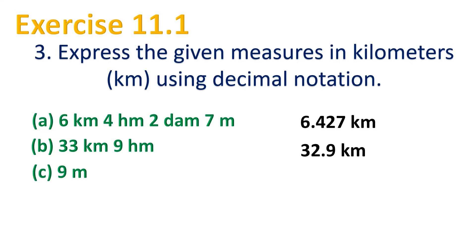Question c: 9 meters — we have to express this in kilometers. There are no kilometers, so we start with 0 point. There are no hectometers, so that is also 0. There are no decameters, so that is also 0. So the answer is 0.009 kilometers, because we are expressing 9 meters in kilometers.